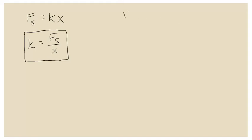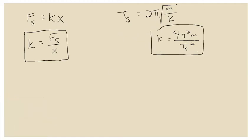Later in this course, probably in March, we're going to be talking about another equation for the period of oscillation of a spring when it's bouncing back and forth between two extremes. If you were to solve that for K, you would get another equation. Both of these equations can be used to solve for K. Obviously, depending on which equation you use, you're going to end up doing a very different experiment, because the equation dictates what needs to be measured, and what needs to be measured determines what equipment you're going to use.